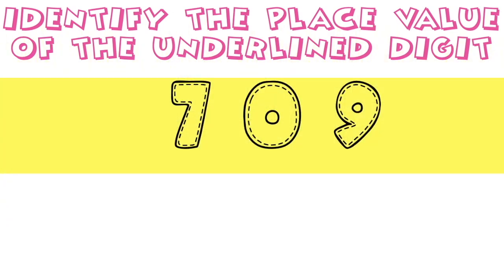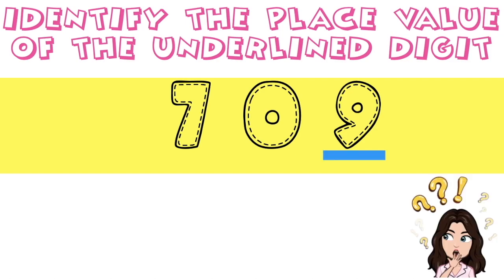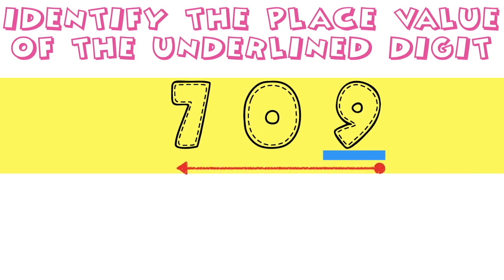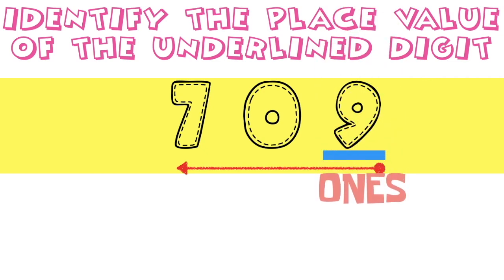How about if we have 709? What is the place value of digit 9? Always remember, in identifying the place value, you are going to start from the rightmost digit going to the leftmost digit. Since digit 9 is the first digit from the right, what is the place value? Fantastic! Digit 9 is in the ones place!